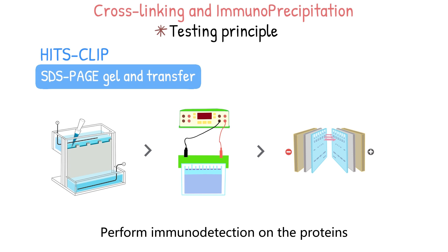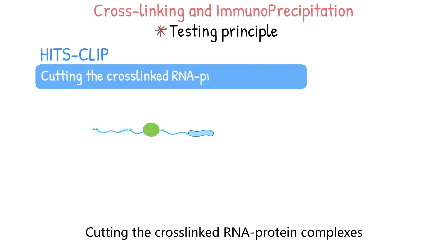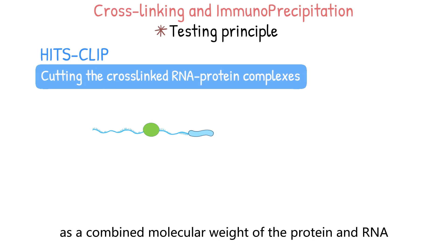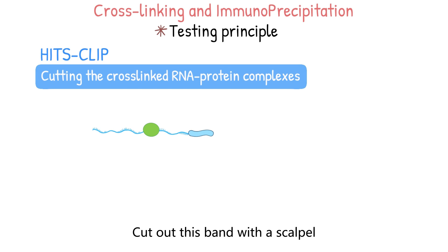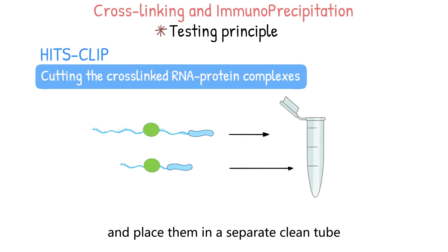Perform immunodetection on the proteins transferred to the membrane to ensure purity. Step 6: Cutting the cross-linked RNA-protein complexes. The RNA-protein complexes run as a combined molecular weight of the protein and RNA. Cut out this band with a scalpel, then cut the nitrocellulose pieces into smaller pieces and place them in a separate clean tube.